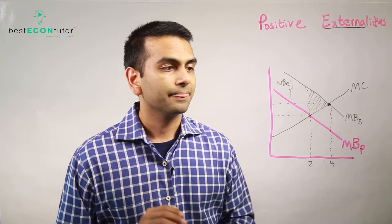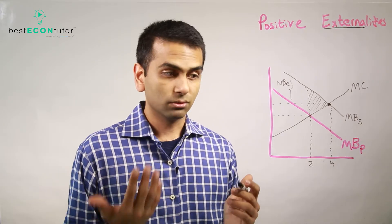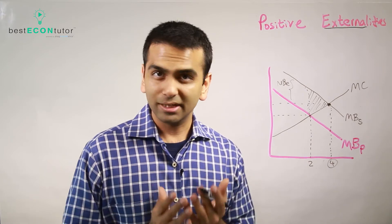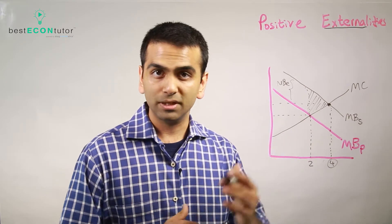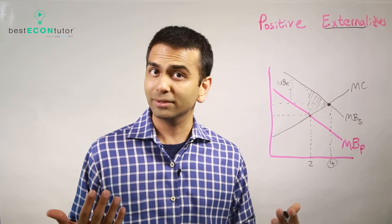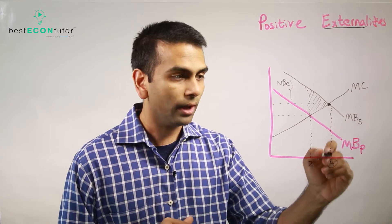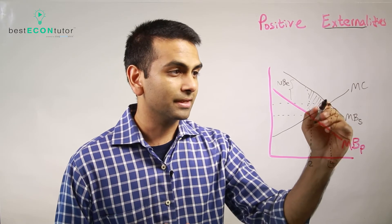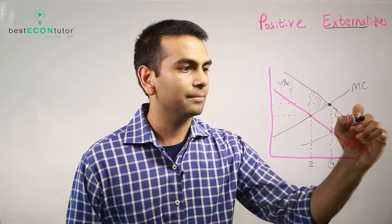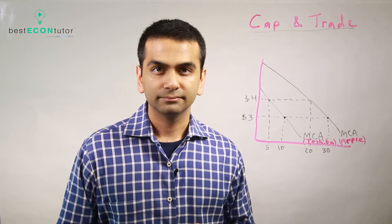If you're the government wanting to get rid of the deadweight loss, you need to make people consume four years instead of two. The only government action that increases quantity in a market is a subsidy — the polar opposite of a tax, where you give people money for doing something. To find the exact subsidy amount, look at the optimal quantity and find the marginal external benefit there. Subsidize by that much, the supply shifts down, the private market now intersects at a quantity of four, and the deadweight loss disappears.